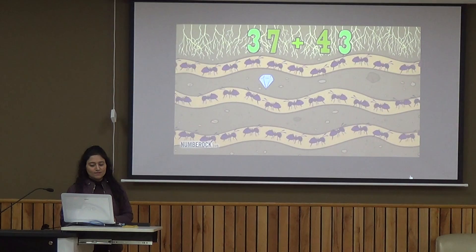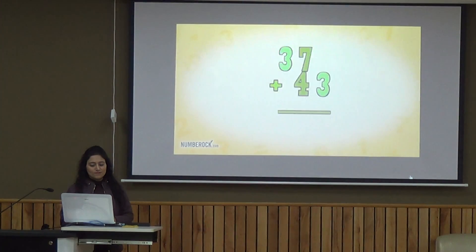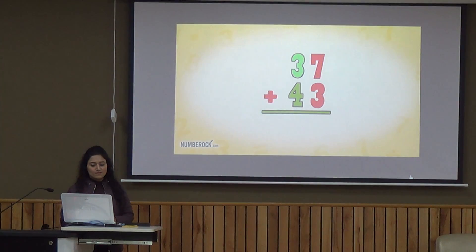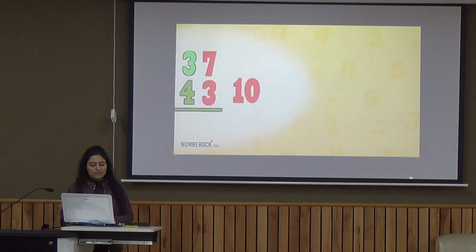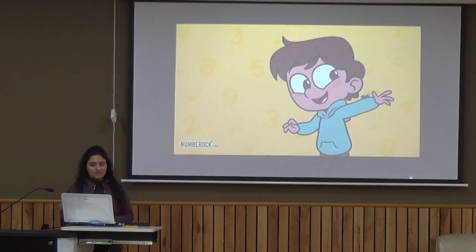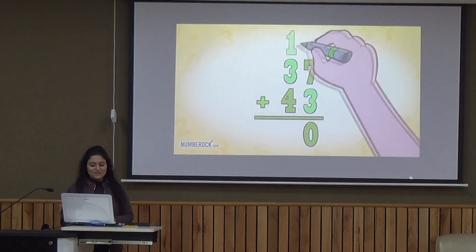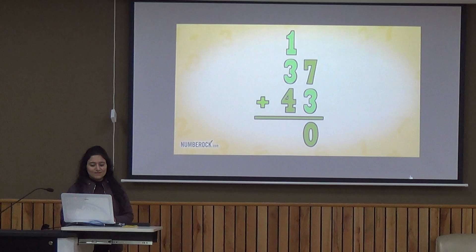7 plus 3 equals 10. Each one of them is my special insect friend. Zero stays at the ones place, and the 1 ten heads next door.